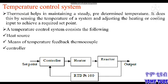The temperature control system is closed. The thermostat maintains a steady, predetermined temperature. Sensors will maintain the temperature. It does this by sensing the temperature of a system and adjusting the heating or cooling input to achieve a required set point. The output of the system is continuously indicated by the thermostat. The temperature control system consists of the heat source — you can also start the actuator. The means of temperature feedback is on the sensor.